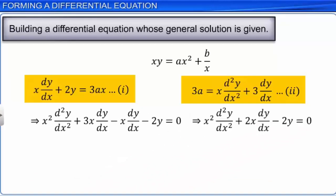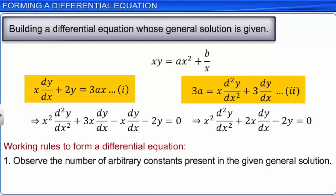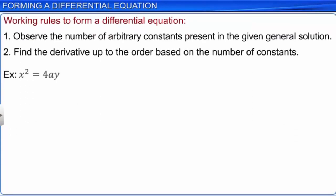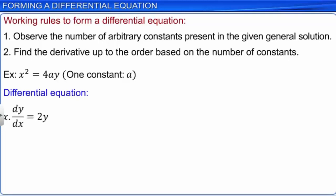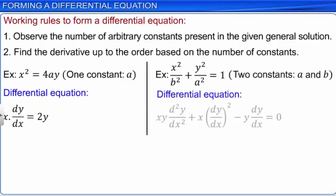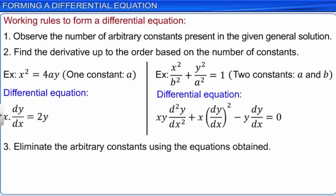Based on this discussion, we can devise rules to form a differential equation. First, observe the number of arbitrary constants present in the given general solution. Then find the derivative up to the order based on the number of constants. For example, if the number of arbitrary constants is 1, differentiate once; if it is 2, differentiate twice. Finally, eliminate the arbitrary constants using the equations obtained.